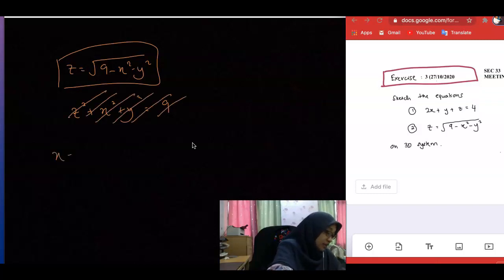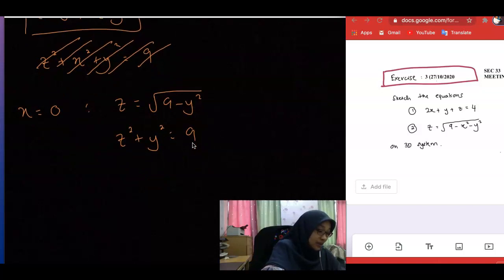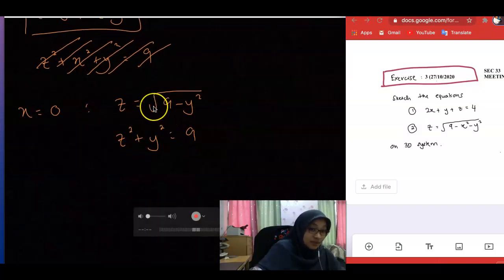So for the x trace, when you set x equal to 0, you have z equal to the square root of 9 minus y squared. And I know that you will modify it, so you have z squared plus y squared equal to 9. This is after modification. But the original one means that z is always positive. After you modify, we know this looks like a circle with radius 3 on the zy plane.